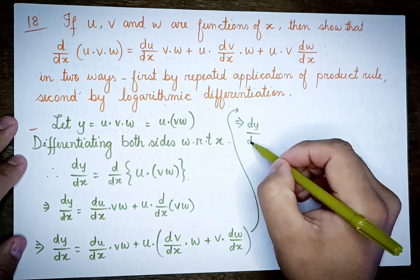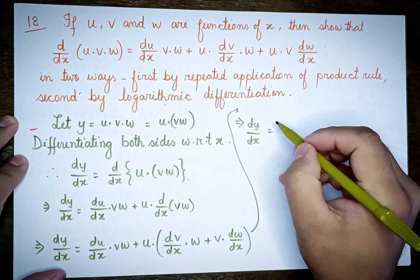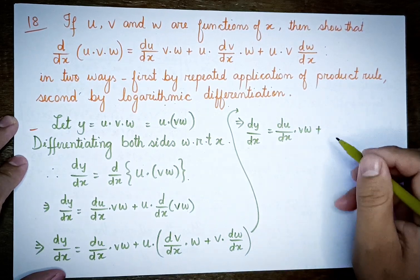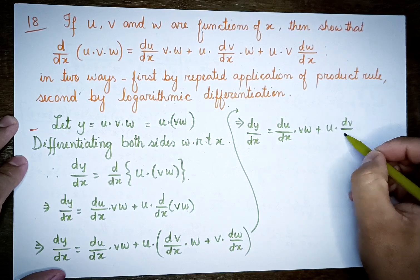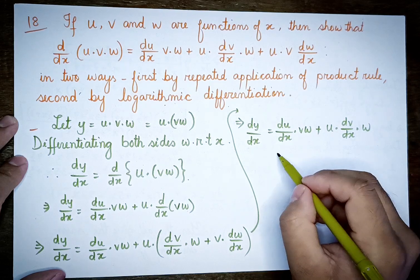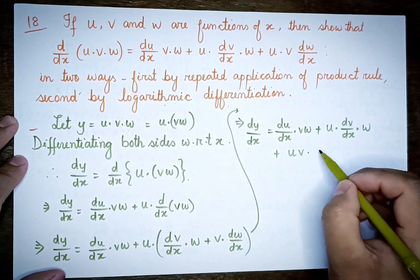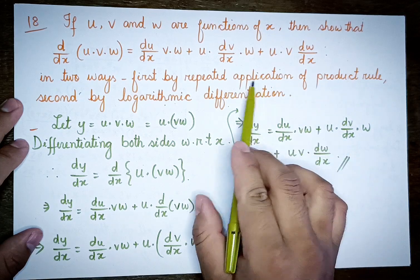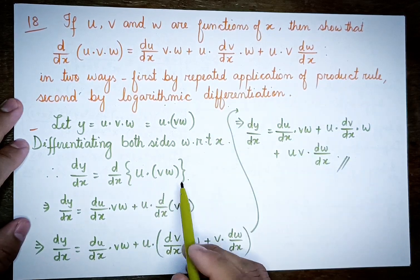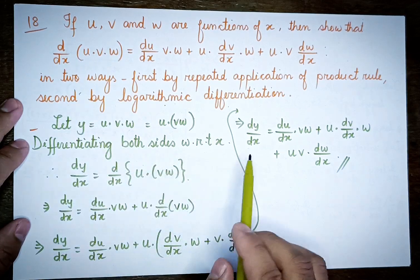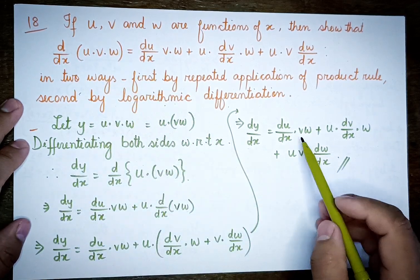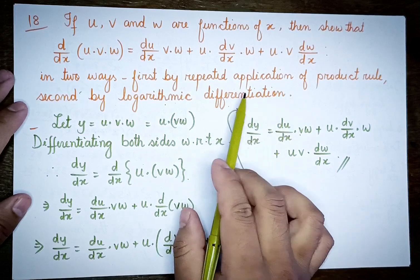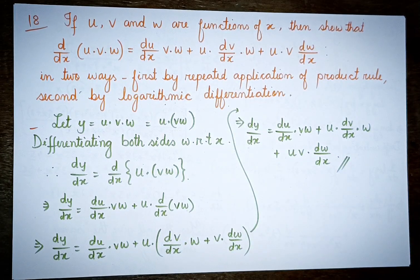This implies dy/dx equals du/dx into vw, plus u into dv/dx into w, plus uv into dw/dx. This completes the first method using repeated applications of the product rule.